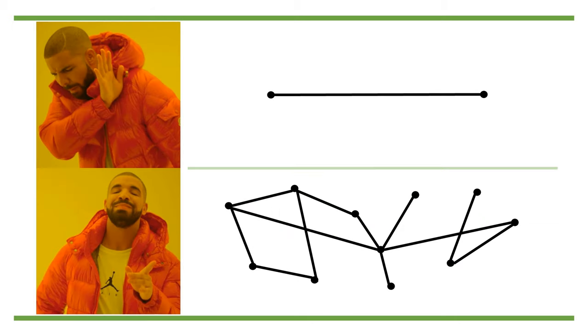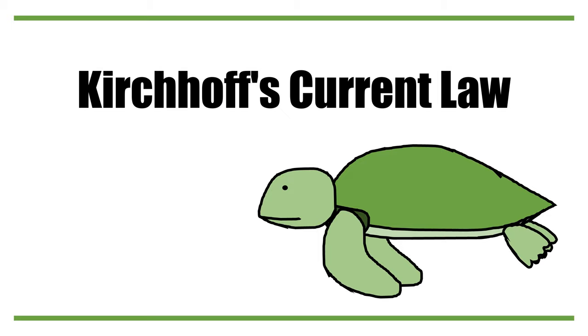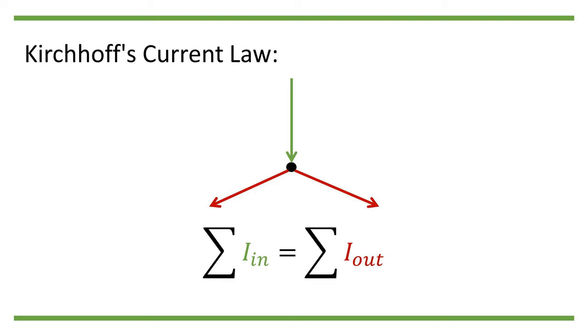Secondly, we want to deal with grids that have a more complex topology than the series circuit we have just shown earlier. Obviously, we need a more systematic approach to attack such a complex grid, rather than using Ohm's law one circuit at a time. To systematically analyze a complex grid, we need another law: Kirchhoff's current law.